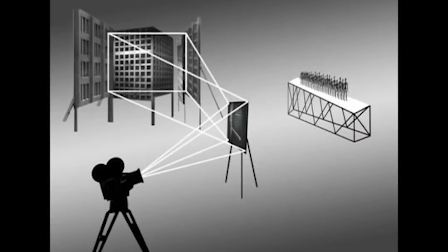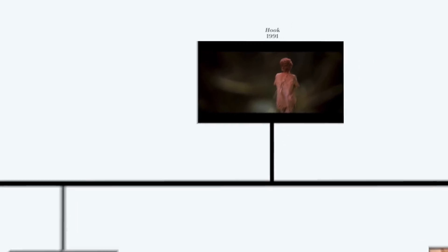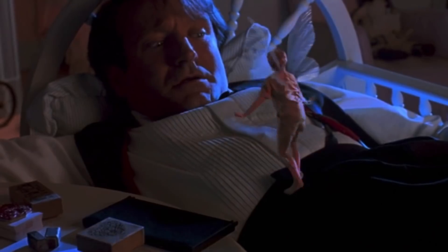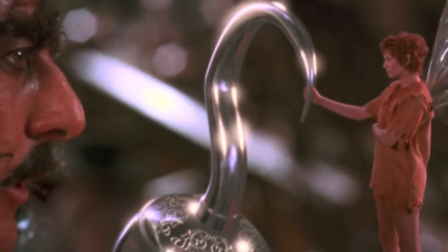It wasn't really until the advent of digital technology that new techniques started to be utilized. Hook in 1991 used some of the similar techniques — composites and blue screen — in order to create the miniature look of Tinkerbell. Tinkerbell was also combined with photographic elements for her wings that were actual miniatures, photographed separately and then composited with her.